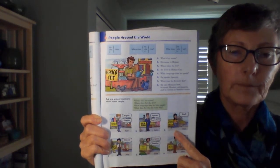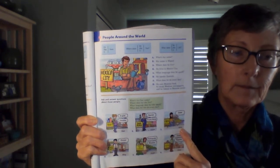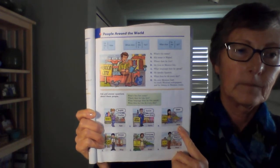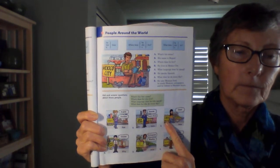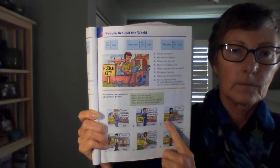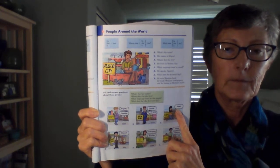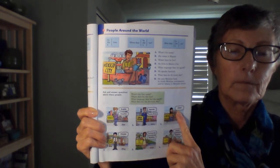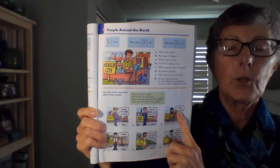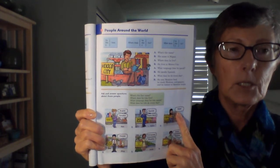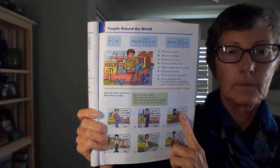Number three — we'll begin. What's her name? Her name is Anna. Where does she live? She lives in Athens. What language does she speak? She speaks Greek. What does she do every day? She eats Greek food, she reads Greek newspapers, and she listens to Greek music.